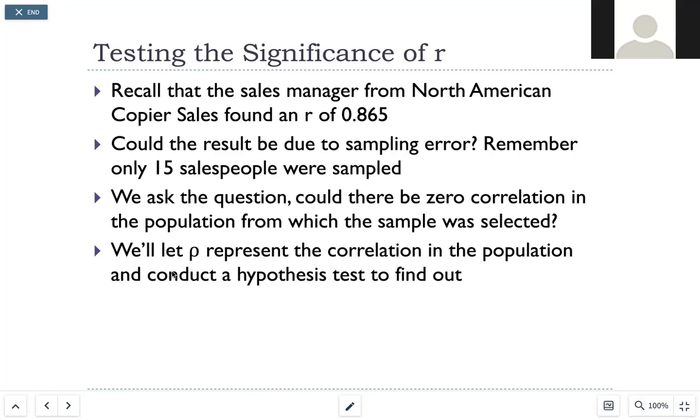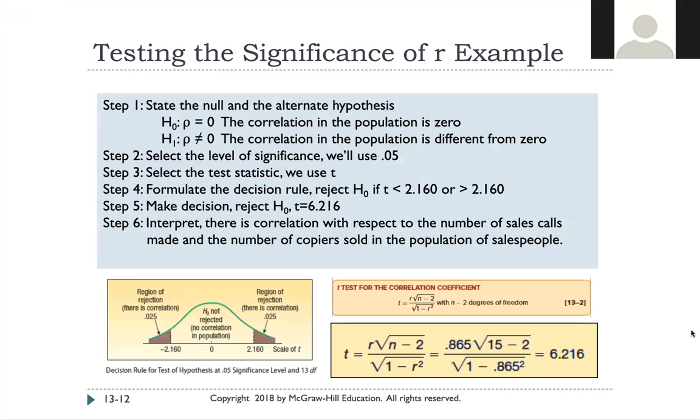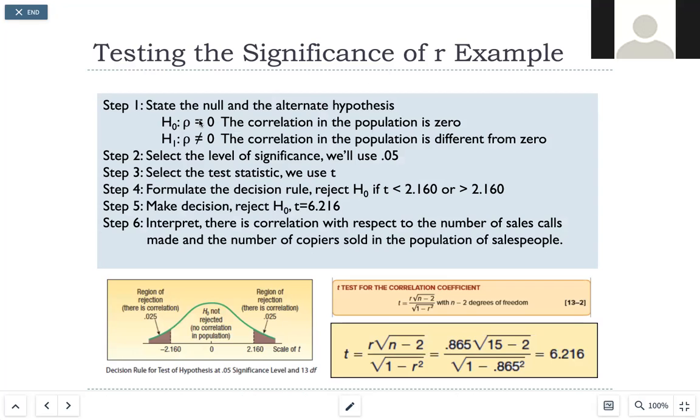So you'll be asking the question, could there be zero correlation in the population from the sample that they selected? So rho will represent the correlation, whatever you want to call it. And then you'll conduct a hypothesis test. So for the previous question, they're looking at rho equals zero. The correlation in the population is zero or rho does not equal zero. So they'll select the level of significance we'll use.